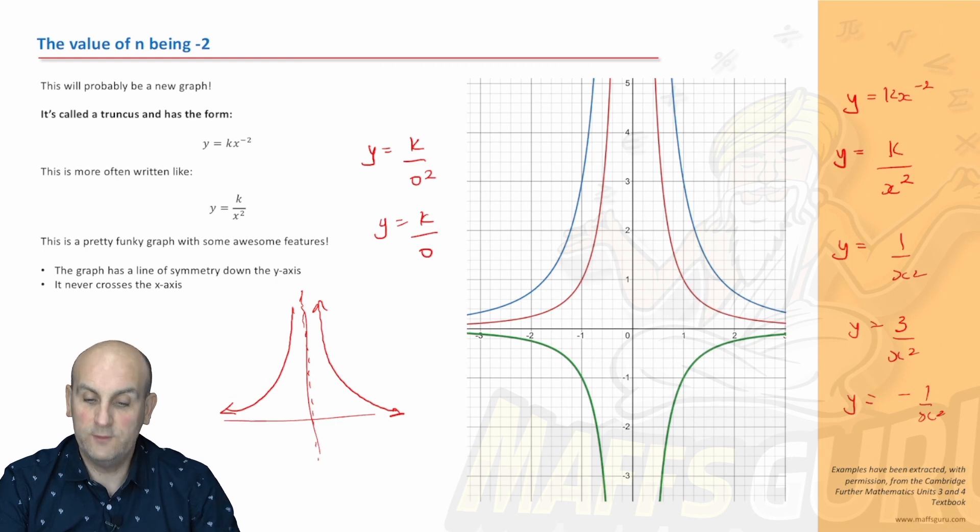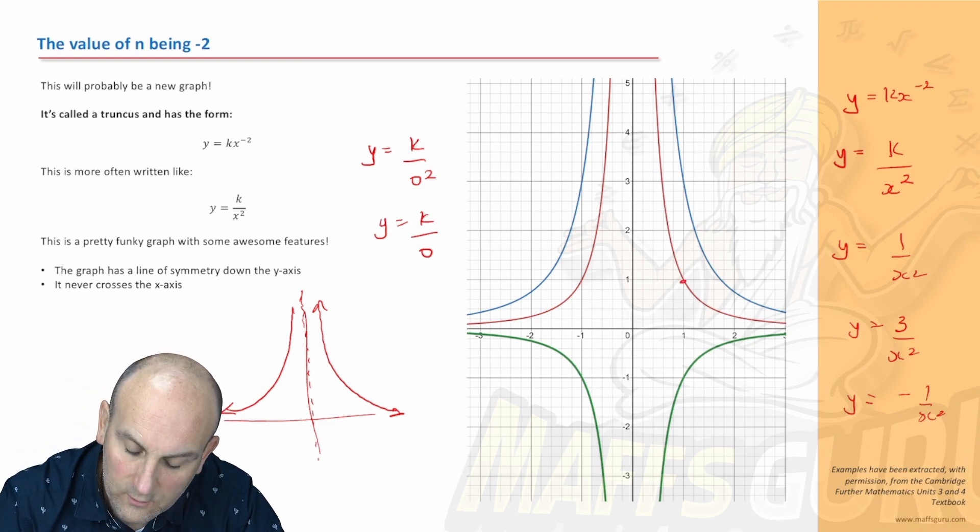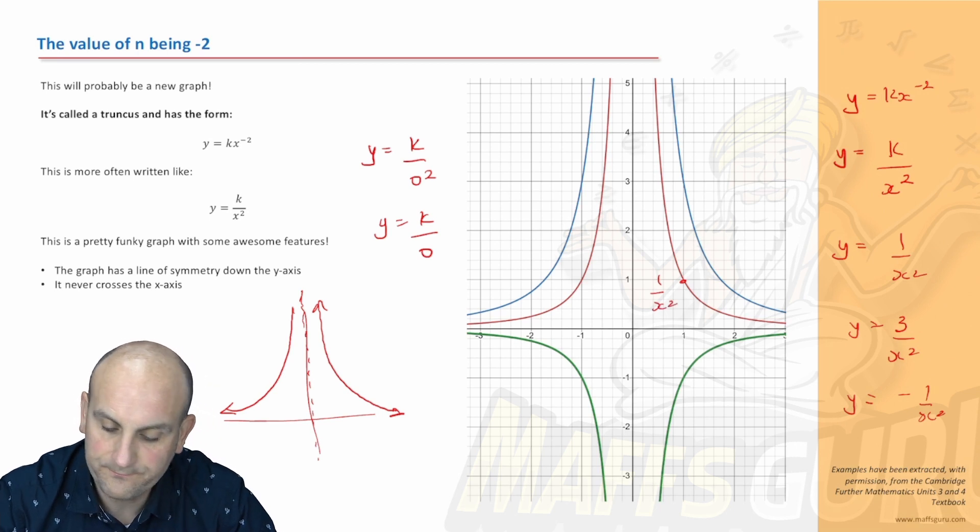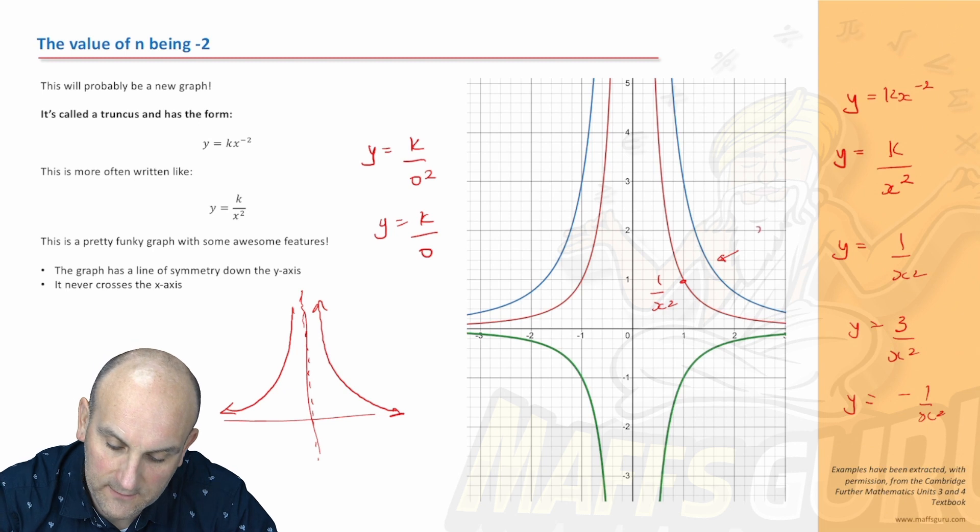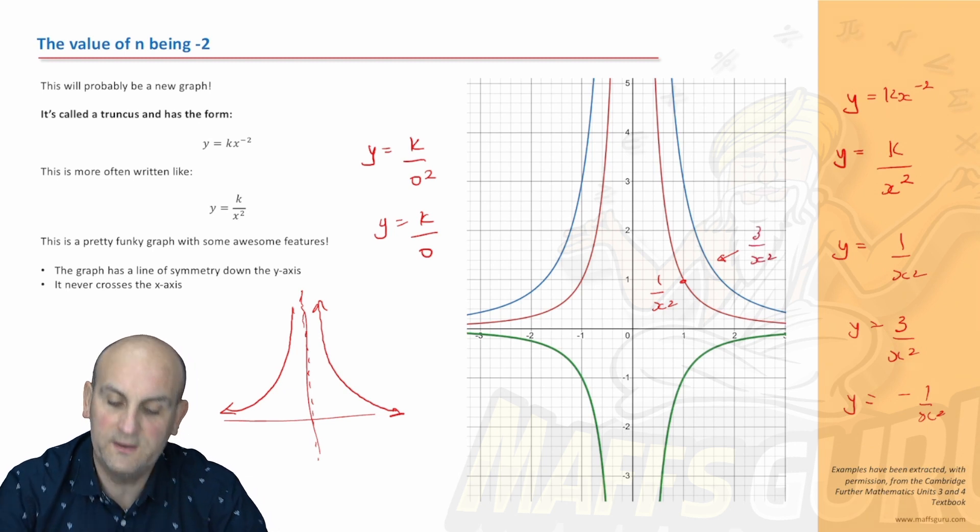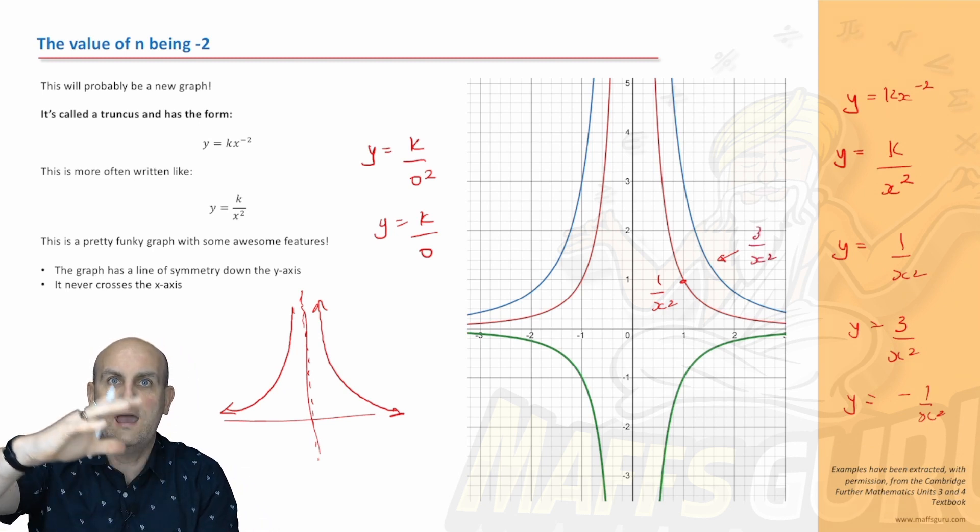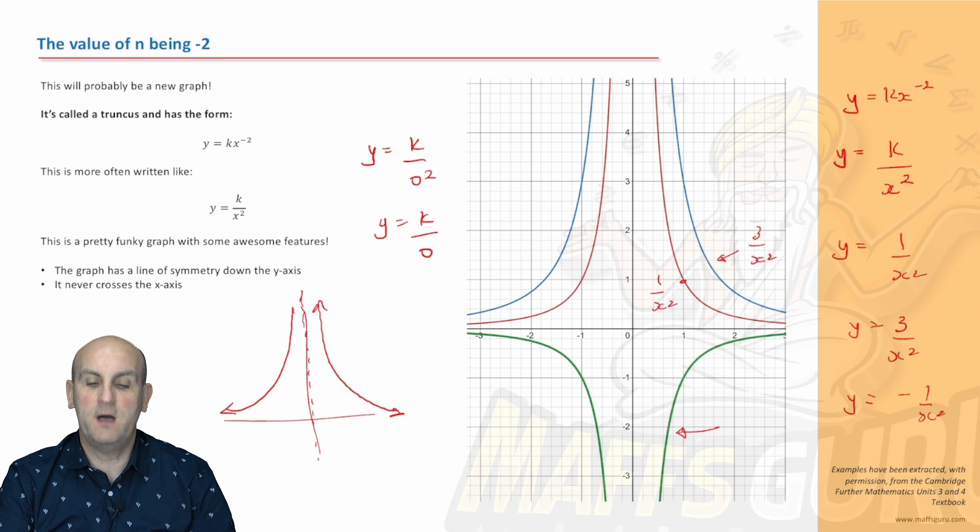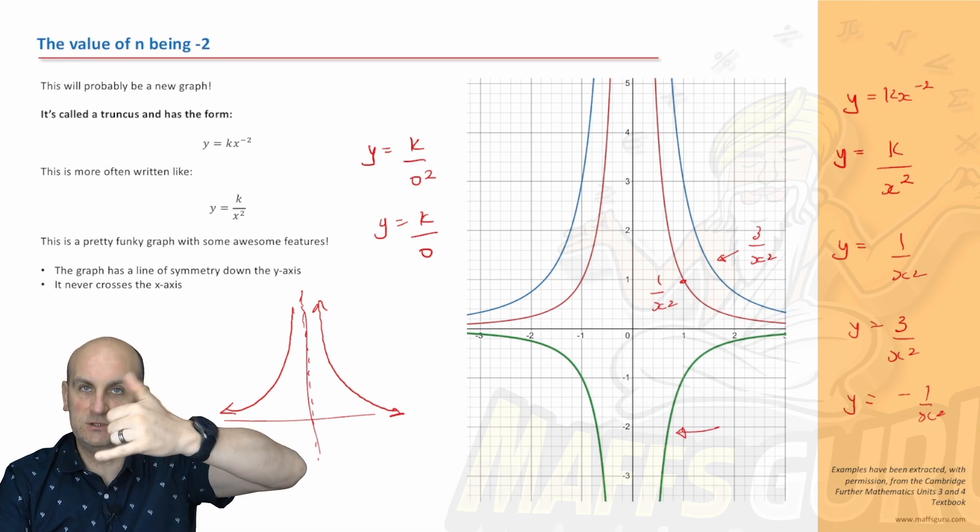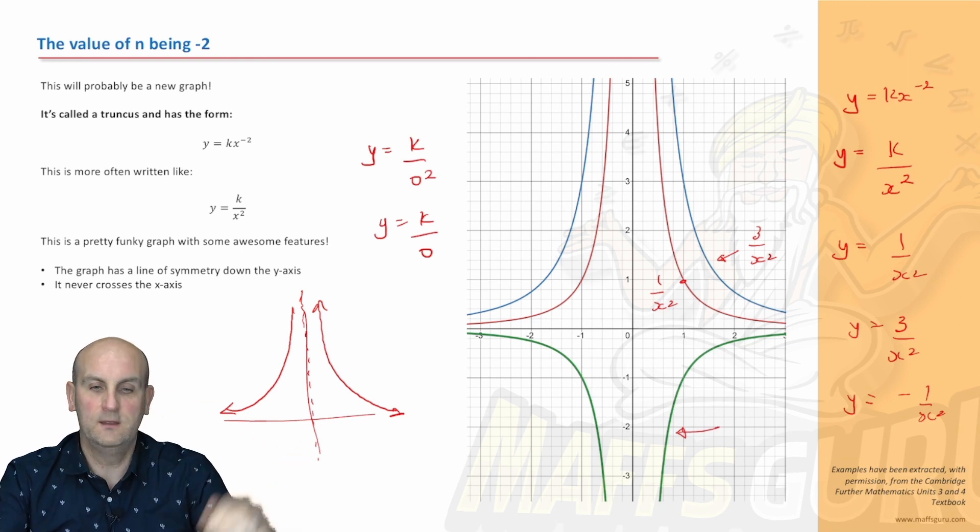What do we notice? This one here would be 1 on x squared, and this one here would be maybe 3 on x squared. So what's happened again? It's dragged it away from the x-axis. The green one here is the negative version, it's minus 1 on x squared because it's just reflected it. Great, really.